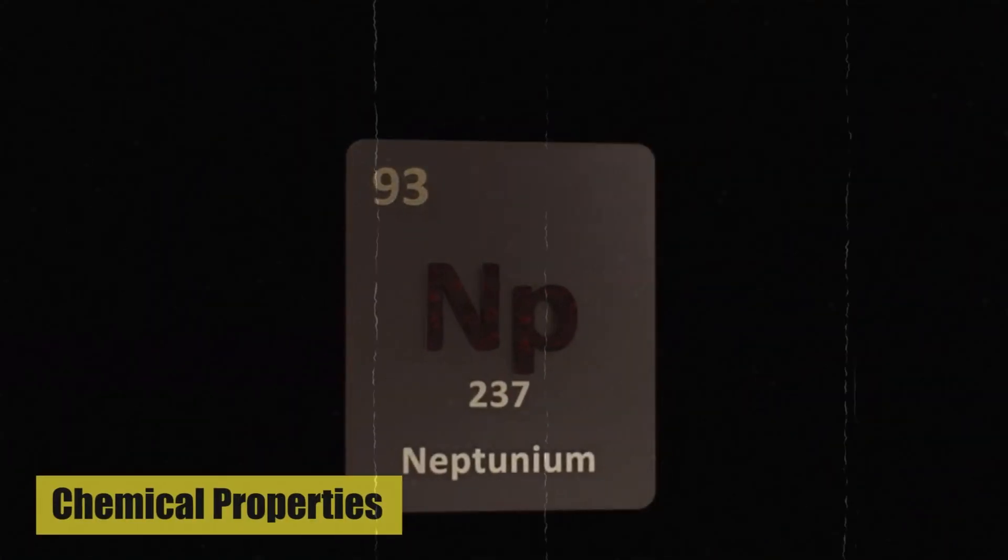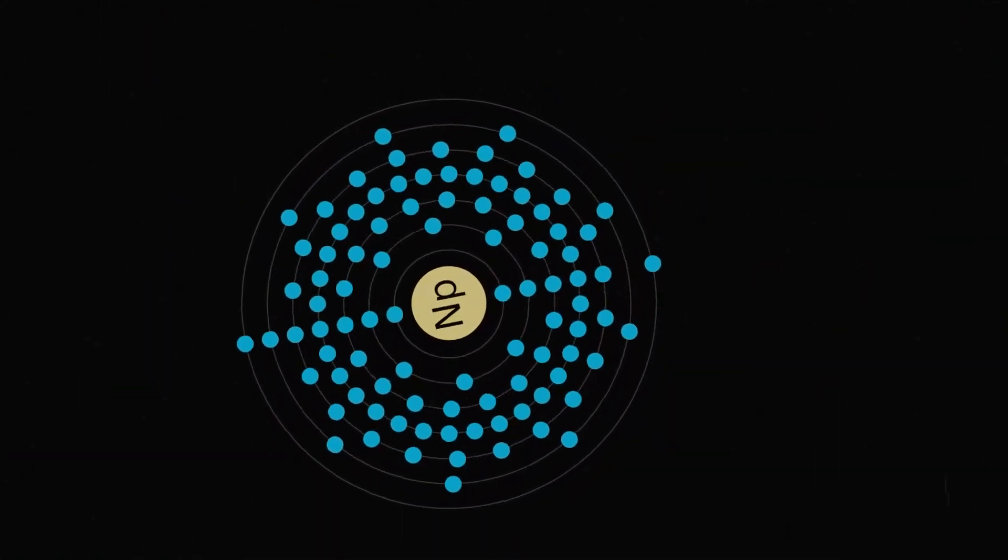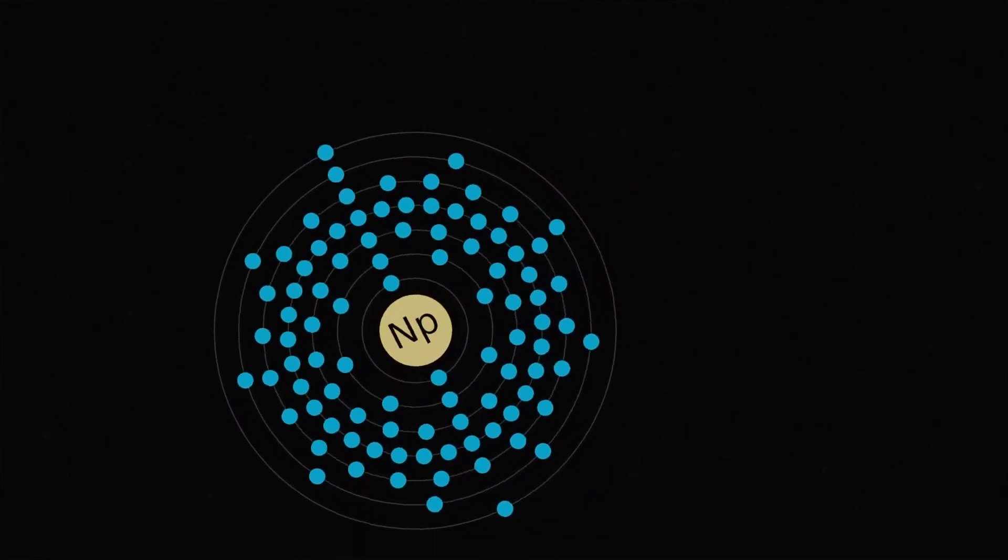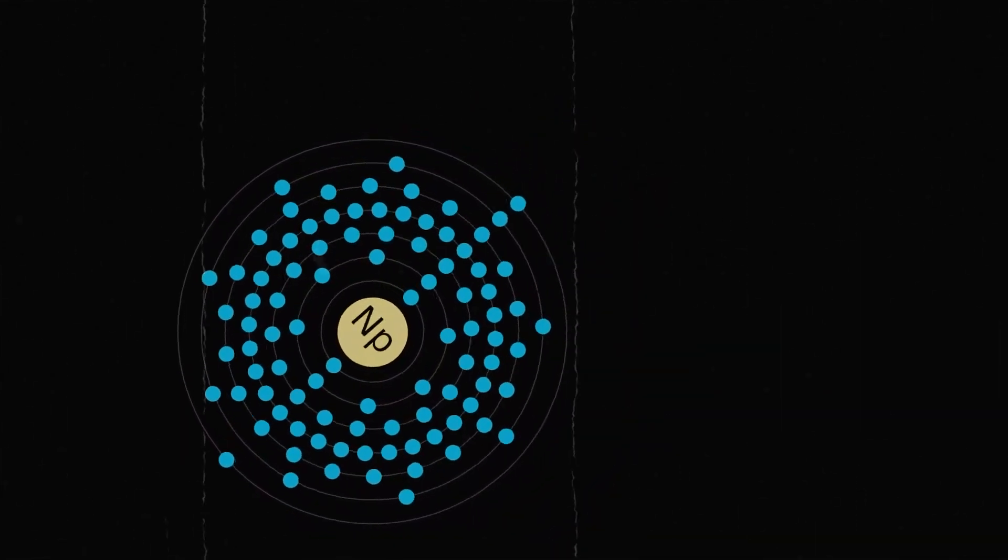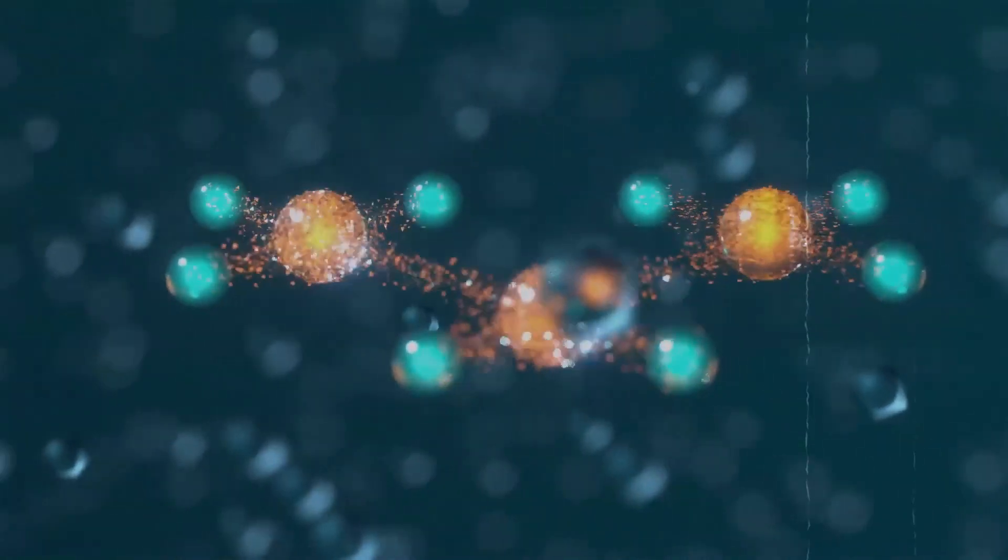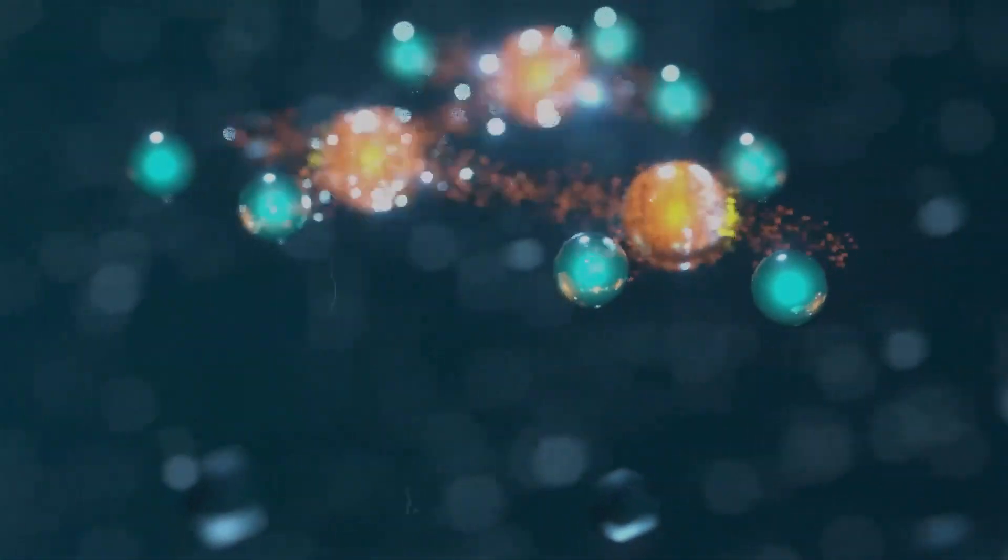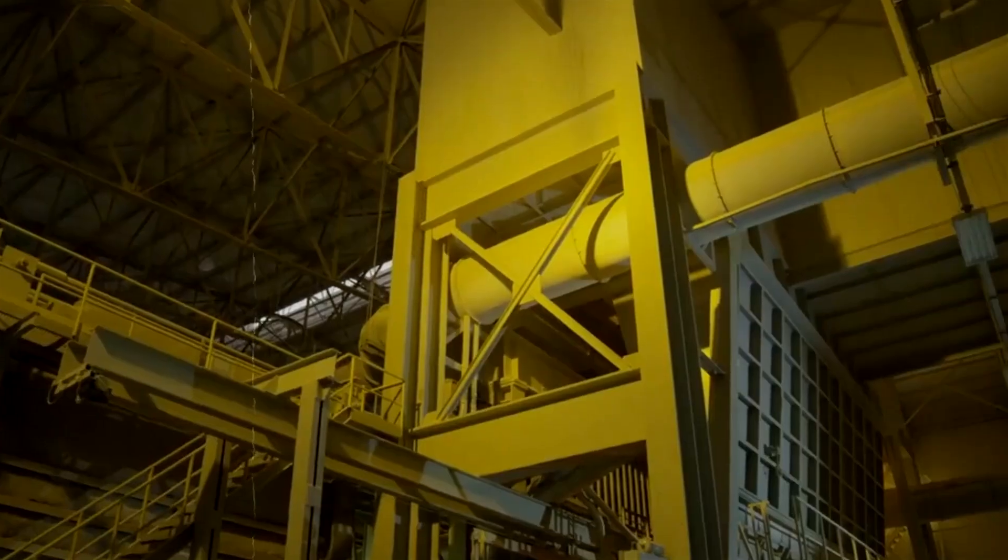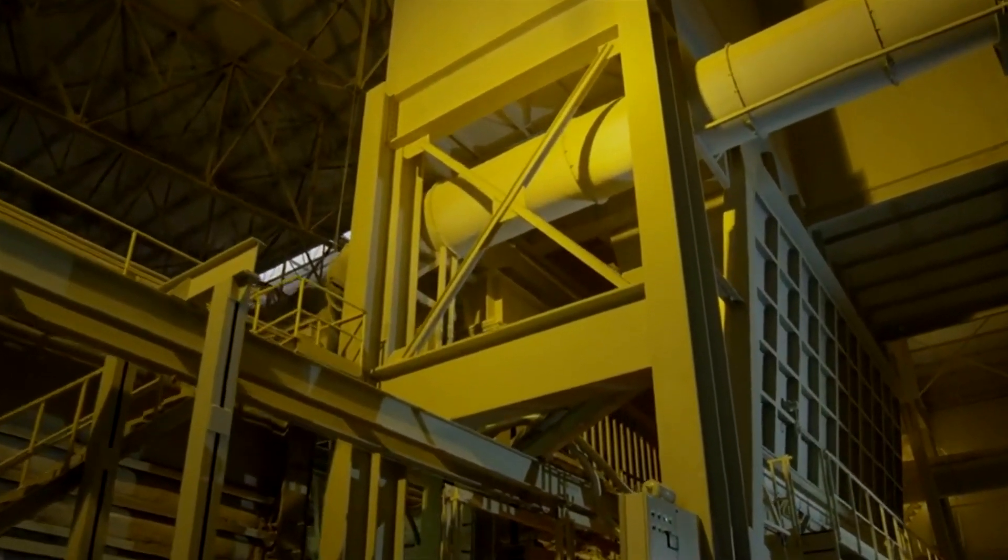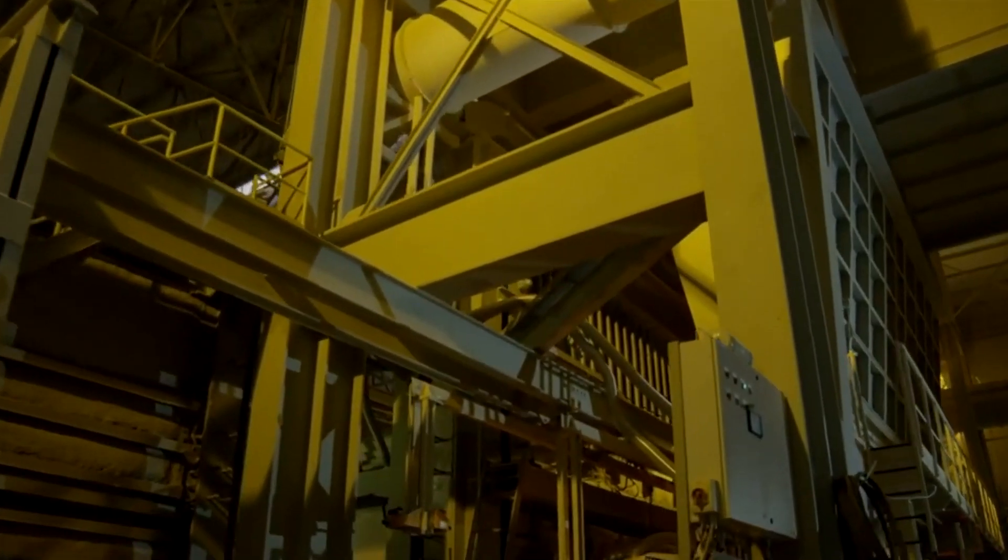Chemical properties: Neptunium is highly reactive, especially in its higher oxidation states. It can form compounds with oxidation states ranging from plus 3 to plus 7, with the plus 5 oxidation state being the most stable in aqueous solutions. Neptunium compounds are mainly studied for their role in nuclear chemistry and technology.